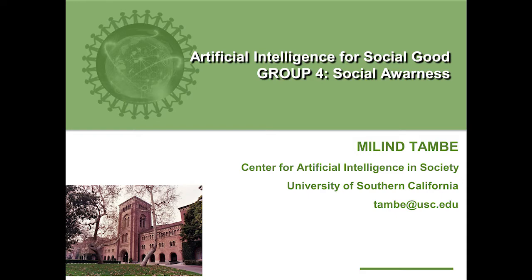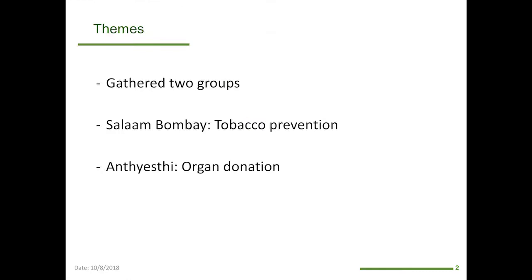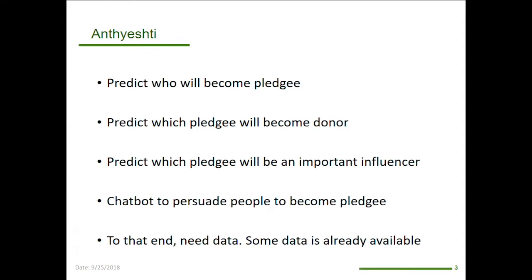Ours will be more of a collaborative presentation. I call the rest of the team in group four to come here. This was the group where we talked about social awareness, and there were two NGOs that were part of our group: Salaam Bombay for tobacco prevention and for organ donation. I'm going to lay out the set of AI challenges and they'll speak to the kind of data they have and what can be done.